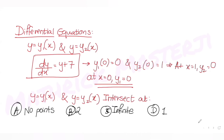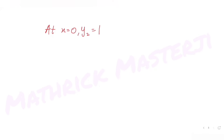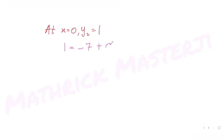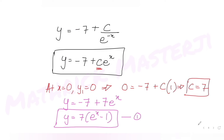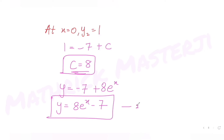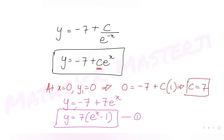For the second condition: at x = 0, y2 = 1. Substituting: 1 = −7 + C · e^0 = −7 + C, so C = 8. The solution becomes y2 = −7 + 8e^x, which gives y2 = 8e^x − 7. That's the second equation.